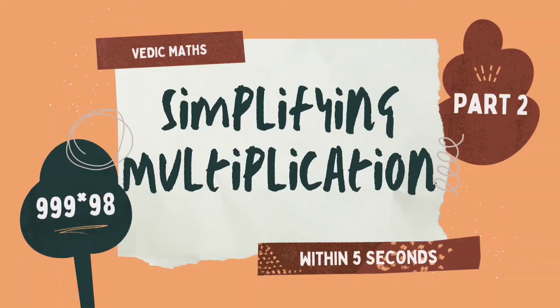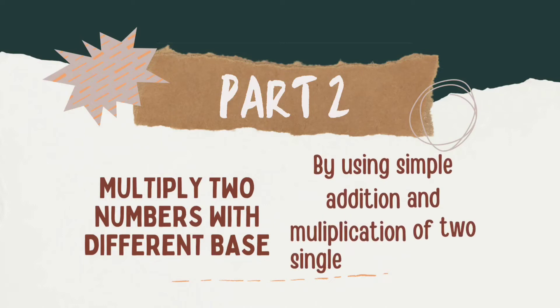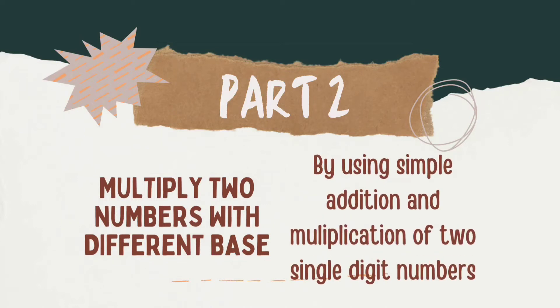In part 2 of Vedic math videos, we will learn about how to multiply two numbers with different bases within 5 seconds. For that we will use simple addition and multiplication of two single digit numbers. Please see my first video first to have a better understanding of this part 2.